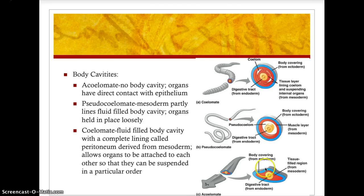In the acoelomate, you can see the body covering is from the ectoderm, the digestive tract is derived from the endoderm germ layer, and the tissue-filled region is from the mesoderm. In the pseudocoelomate, common in simple worms or ribbon worms, the mesoderm partly lines the fluid-filled body cavity and the organs are held in place loosely. You can see the pseudocoelom — that fluid-filled body cavity — with the digestive tract in yellow derived from the endoderm, the muscle layer from the mesoderm, and the body covering on the outside in blue derived from the ectoderm.